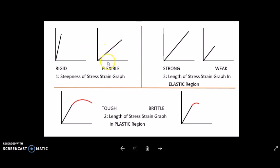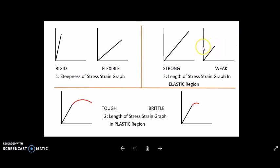For strong versus weak: the strong material can withstand a lot of stress before fracturing or before undergoing plastic deformation. In the weak material, the elastic region is short — the material can only withstand a little bit of stress before undergoing plastic deformation, making it a weak material.